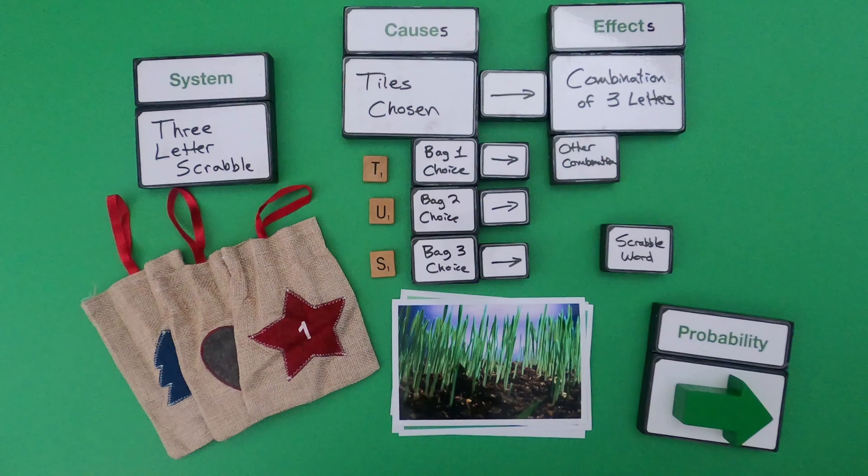The first thing I would do is identify what are the effects and what are the causes. The effects that I get would be the combination of the three letters, and the causes are going to be the tiles that you chose. So let me write down all of those tiles chosen and the combinations we could get. The causes are the letter I choose from bag one, bag two, and bag three. And then the effects — I have two different effects: I could either choose a Scrabble word, or I could choose some other combination of letters.